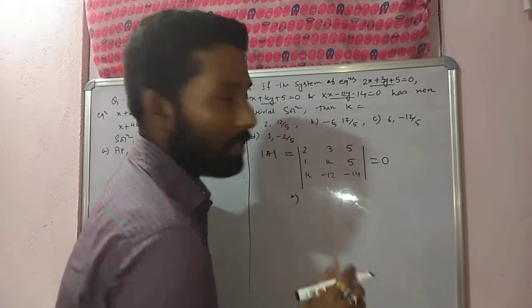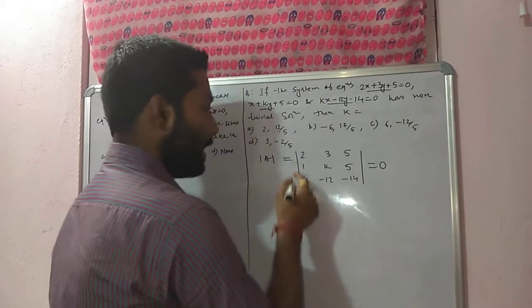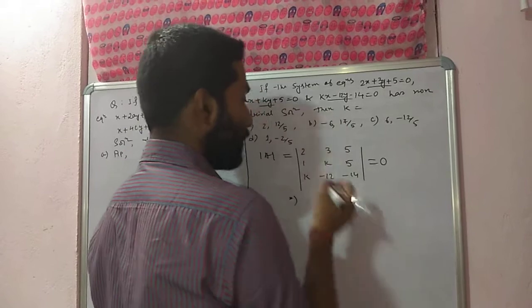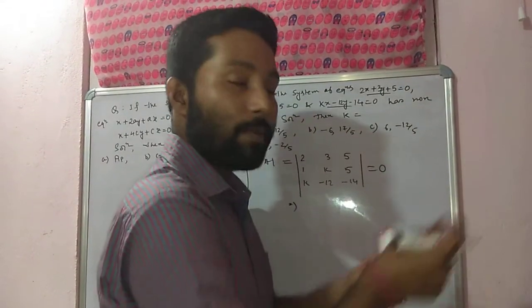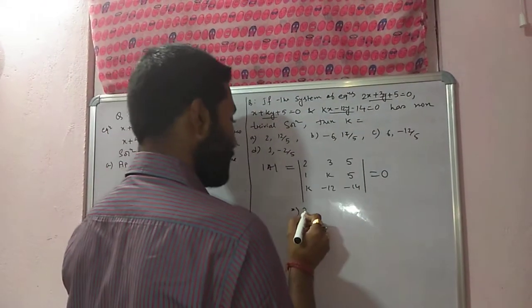Now just you have to expand it to get the values of k. Very simple. We expand it. You can expand it along row-wise or you can expand it along column also.